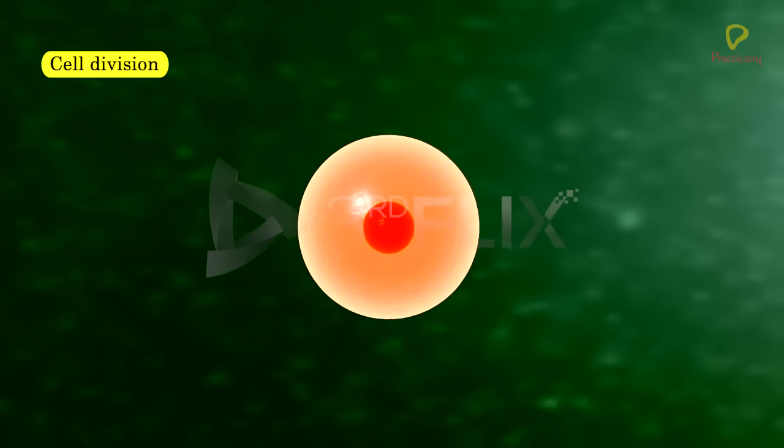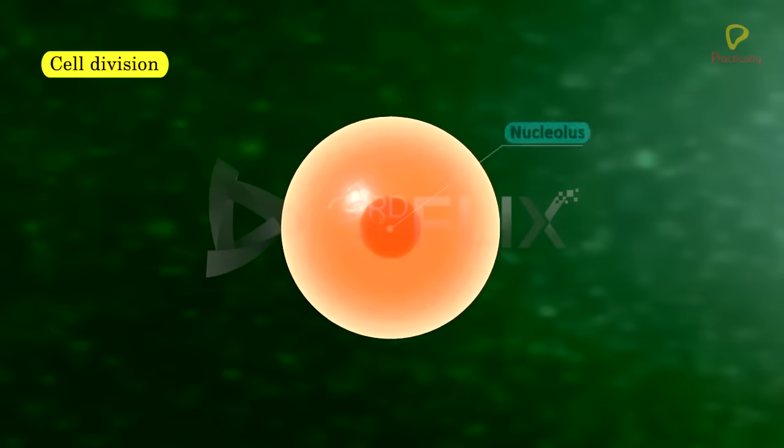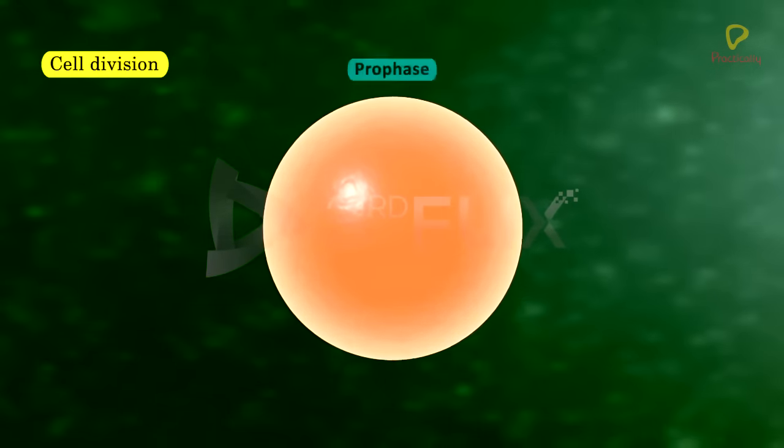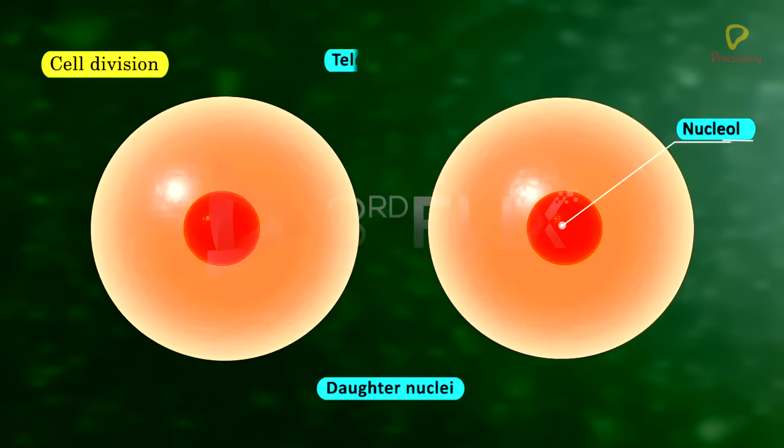During cell division, the nucleolus disappears during prophase and reappears during telophase.